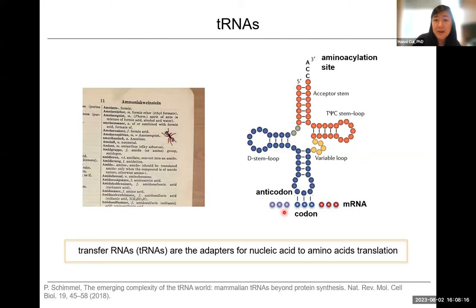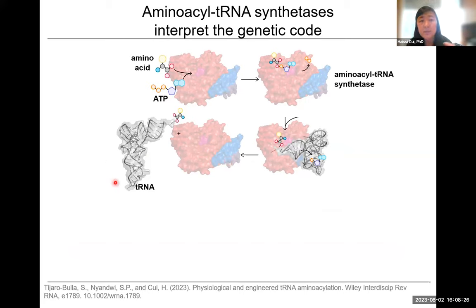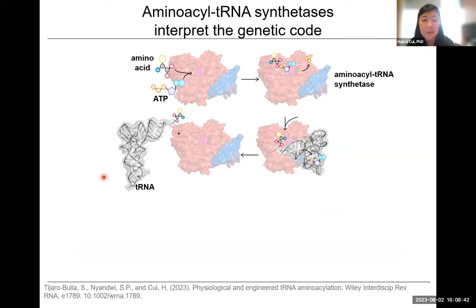That makes aminoacyl-tRNA synthetases philosophically the entities which know the genetic code, because they're able to recognize specific elements on the tRNAs, recognize the corresponding amino acid, and covalently link them together. We have this protein family, each able to recognize one amino acid and the corresponding tRNAs — 20 canonical aminoacyl-tRNA synthetases for the 20 canonical amino acids.